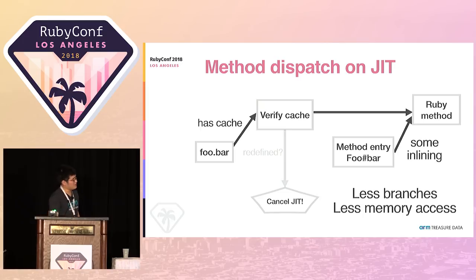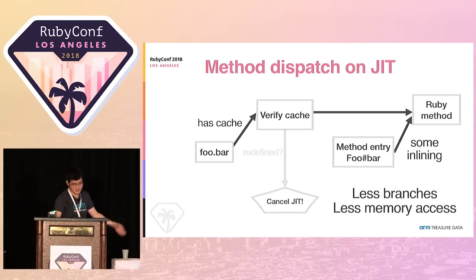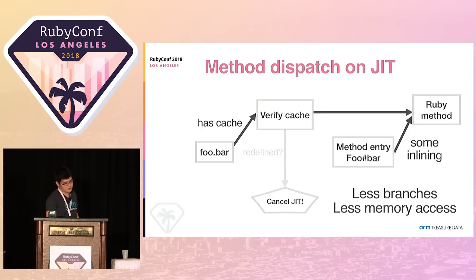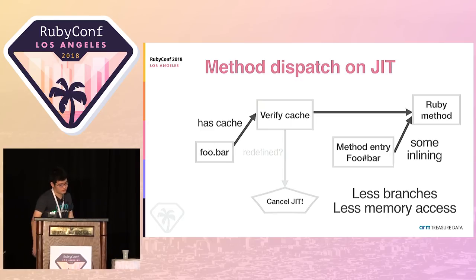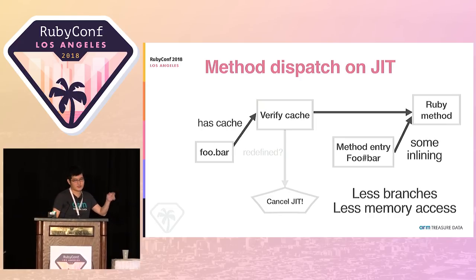For the JIT compiler, we can generate code that already knows `foo#bar` is a Ruby method, and that's the specific method. It eliminates many branches — like switching to the type-of-method check and other things inside the verify-cache path. It reduces branches and doesn't need to rely on branch prediction, and also reduces memory access for reading the method entry, because we can inline the pointer or address to the method entry in the generated code. So it's faster.